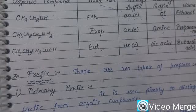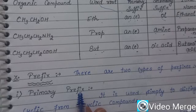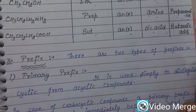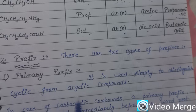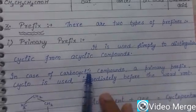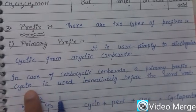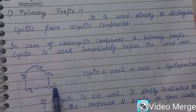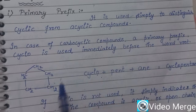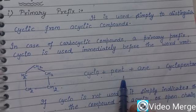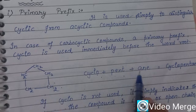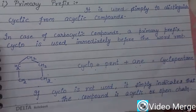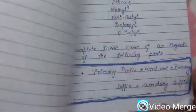Now the third component is the prefix used in naming organic compounds. Prefixes are also of two types. The first is the primary prefix, which is used to distinguish cyclic compounds from acyclic compounds. If we have a cyclic compound, we use the word 'cyclo' before the word root. For example, a compound with a cyclic system of five carbon atoms uses the primary prefix 'cyclo,' the word root 'pent,' and the primary suffix '-ane,' giving the overall name cyclopentane. If the word 'cyclo' is not used, it means the compound is acyclic or open-chain.